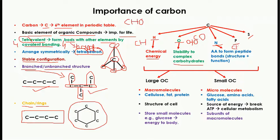The bond of carbon with nitrogen, C-N, is known as the peptide bond. This peptide bond is found in amino acids and is very important for the structure and function of the variety of amino acids, which arrange together to form different types of proteins.